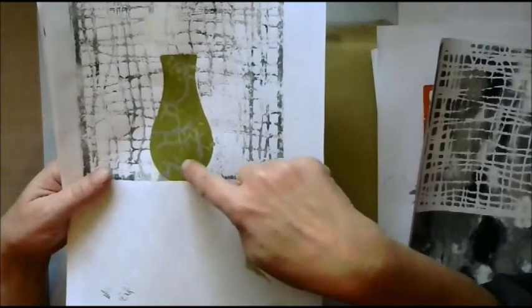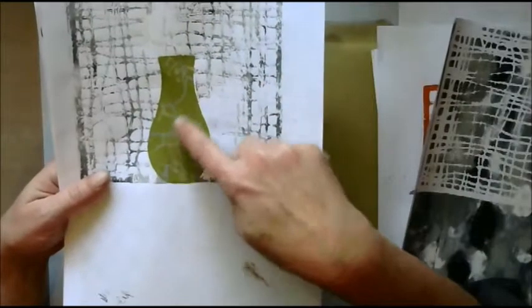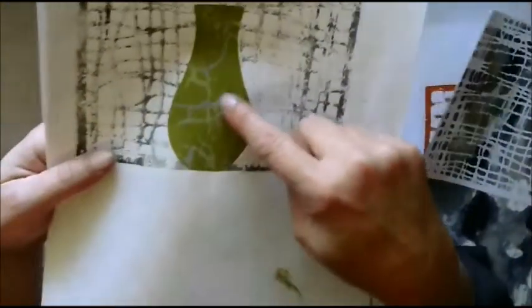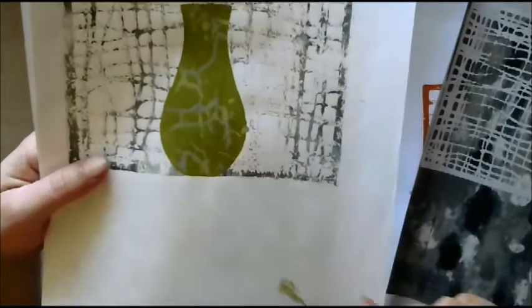And then I had a Prima crackle stencil that I laid down on top of there and used two different colors: a lighter green and then like a silver. Well, it's great because I don't really have—I've got a very small smidgen of silver paint.